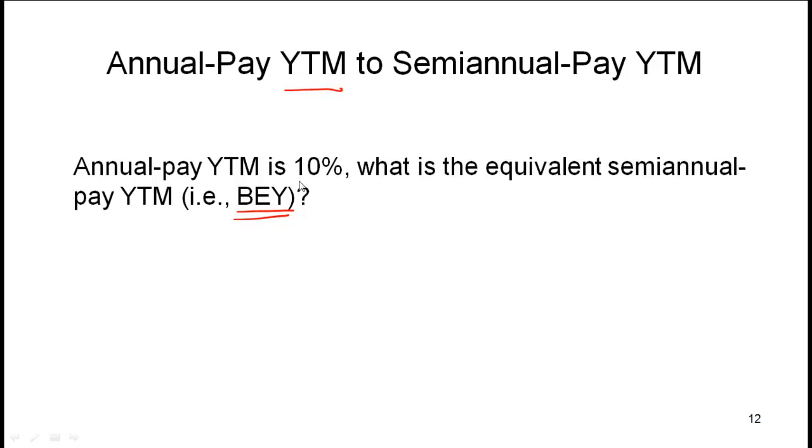If you get 10% on an annual pay YTM, that is saying that essentially $1 will become $1.10 over a year. So what is the effective six-month rate? To get the effective six-month rate you say 1.1 to the power of 0.5, which gives you the effective rate for a six-month period. So 1.1 raised to the power of 0.5, which is half a year or six months, equals 1.0488.